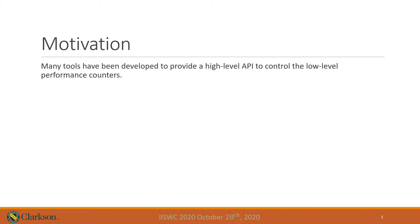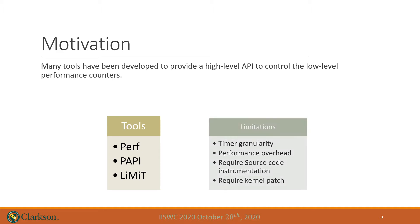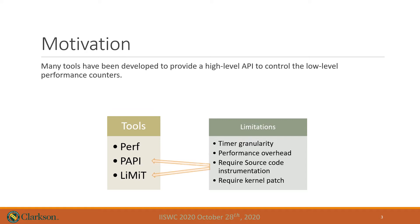There are a lot of open source tools that have been developed to provide a high-level API to control and collect the performance counter data — tools such as Perf, Linux, PAPI, and Limit. However, there are some drawbacks for each available tool, such as low timer granularity, high performance overhead, some tools require source code modification, and some tools require the user to patch the kernel.